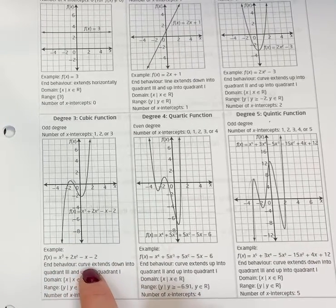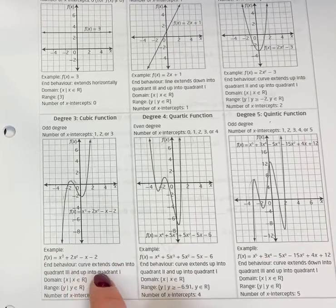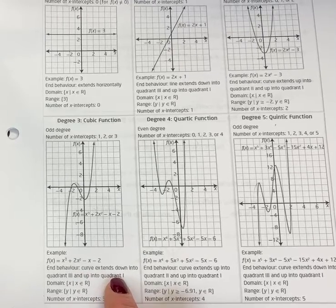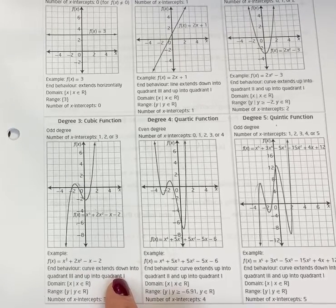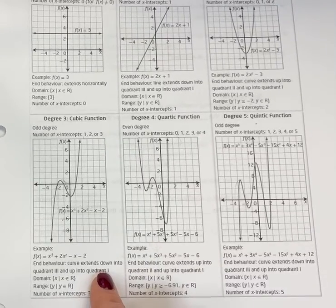Now the textbook gets a little bit wordy when they describe their end behavior. They say 'curve extends down into quadrant three and up into quadrant one.' That is not necessary. People start getting confused about quadrants. I don't want that detail in there; that's just going to make it tougher for you. So we just use the language: falls left, rises right.